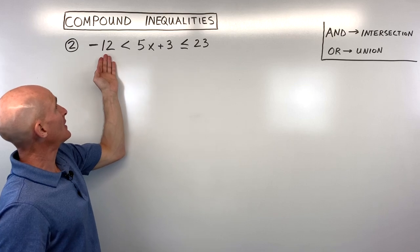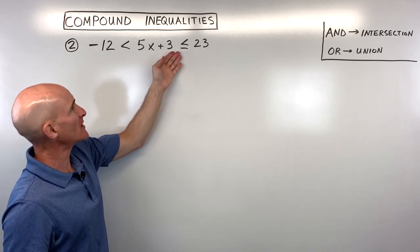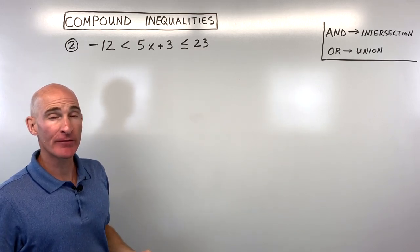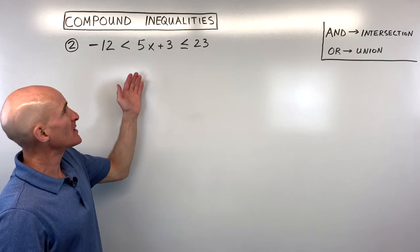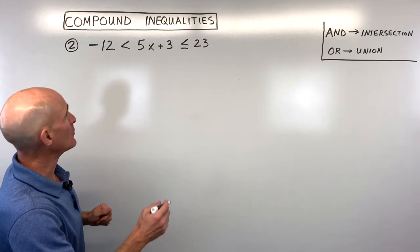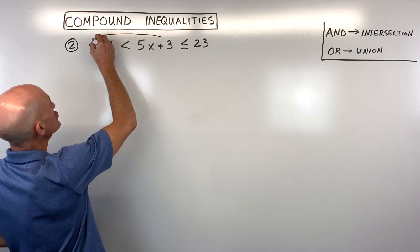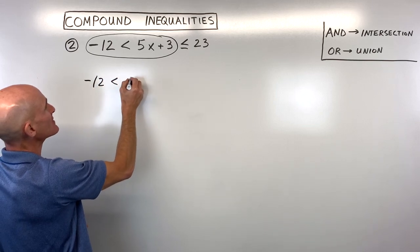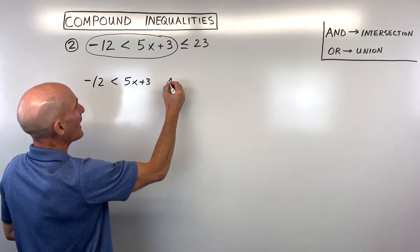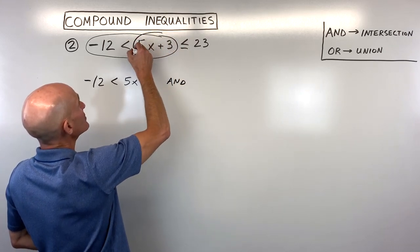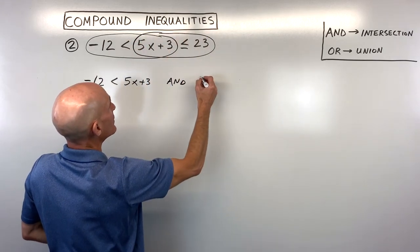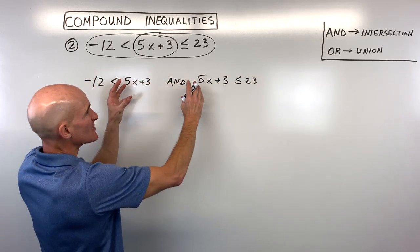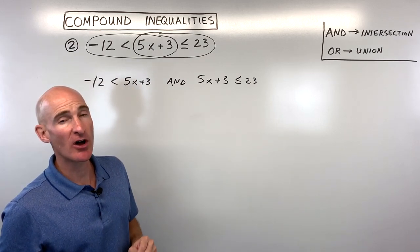For example 2, we have: negative 12 is less than 5x plus 3 is less than or equal to 23. This is different from the first example — it's an implied 'and'. We can split it into two separate inequalities: negative 12 is less than 5x plus 3, and 5x plus 3 is less than or equal to 23.